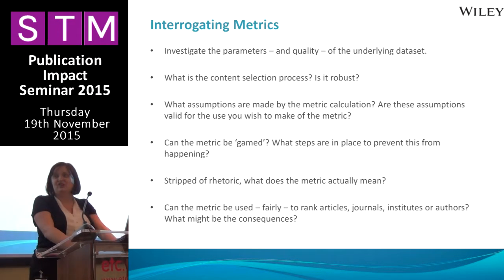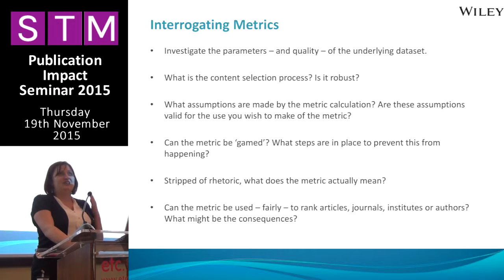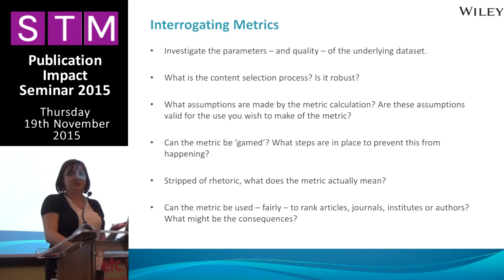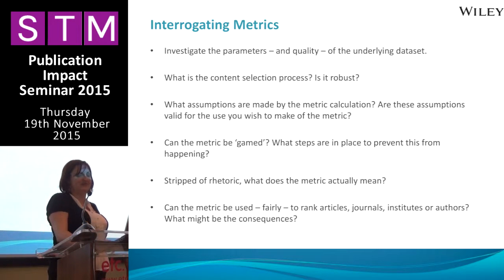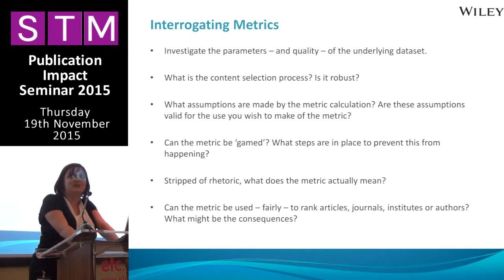Particularly today, with so much pressure on journal editors, on publishers, and on individual researchers, there has really been a proliferation of slightly dodgy metrics to try and offer a strange sort of validation to academic research. And one of the things I get asked a lot is: how can you distinguish the good metrics from the bad metrics?